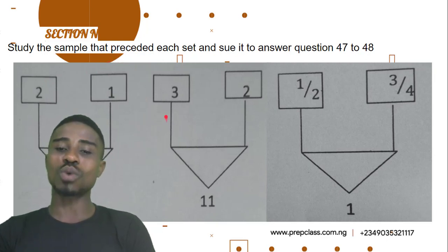Alright, let's look at the next one. 3 times 3 is 9, plus 2 is 11. Or, 11 minus 2 is 9, square root of 9 is 3. Okay, let's try out this one again.